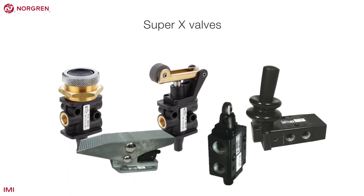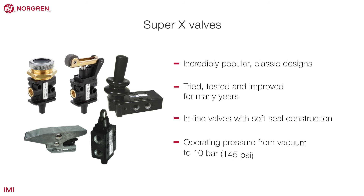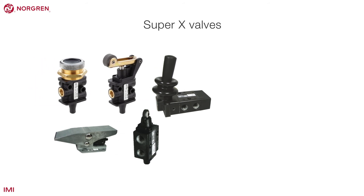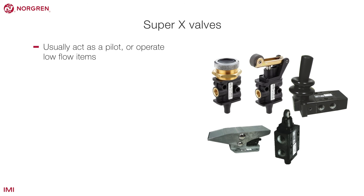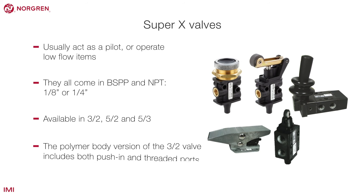Super X manual and mechanical valves are incredibly popular classic designs that have been tried, tested and improved for many years, making them extremely reliable. All are inline valves with soft seal construction and have an operating pressure from vacuum to 10 bar or 145 psi. These valves usually act as a pilot or operate low flow items. They all come in one-eighth or quarter-inch port sizes with BSPP and NPT options and a wide variety of manual or mechanical operators. These valves are available in 3-2, 5-2 and some 5-3 functions. The polymer body version of the 3-2 valve includes both push-in and threaded ports.